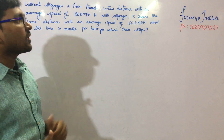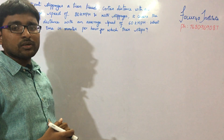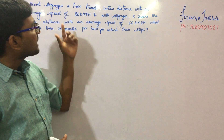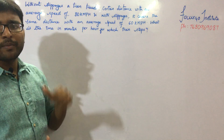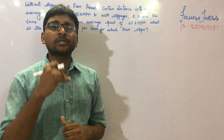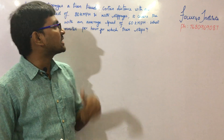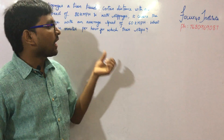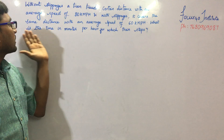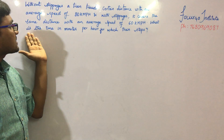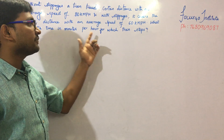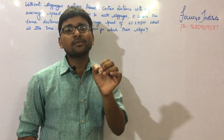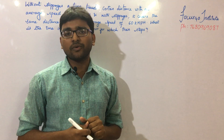Without stoppages, a train travels; after a break it continues to travel at a speed of 80 km per hour. With stoppages, the speed drops to 60 km per hour. So what is the time in minutes per hour for which the train stops?